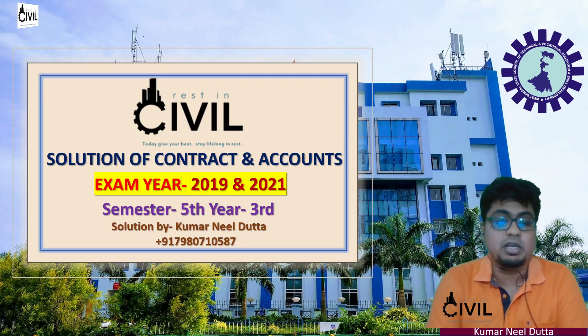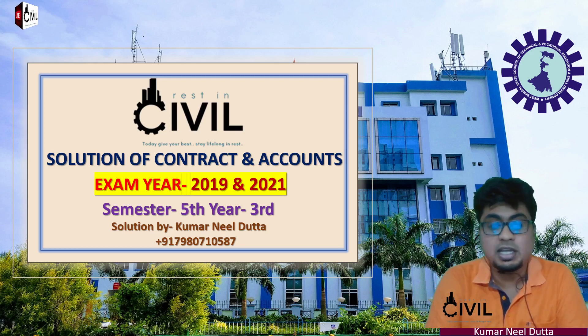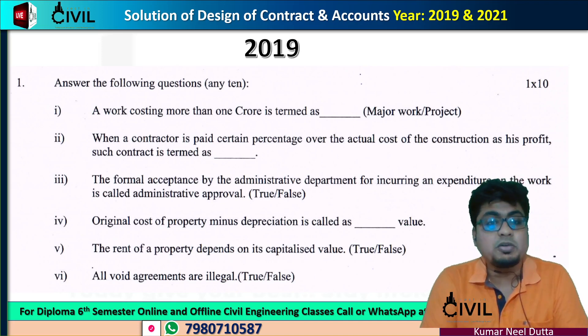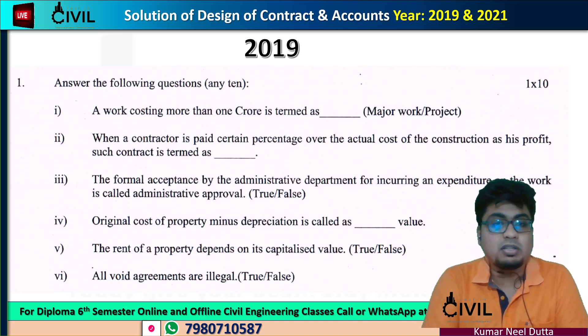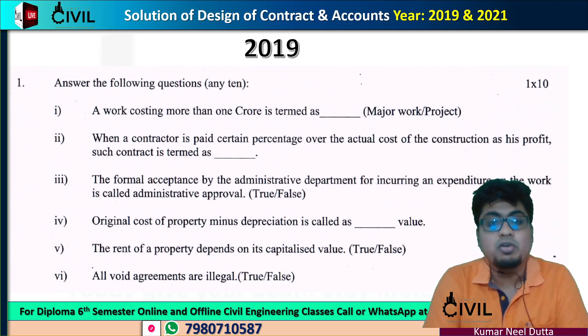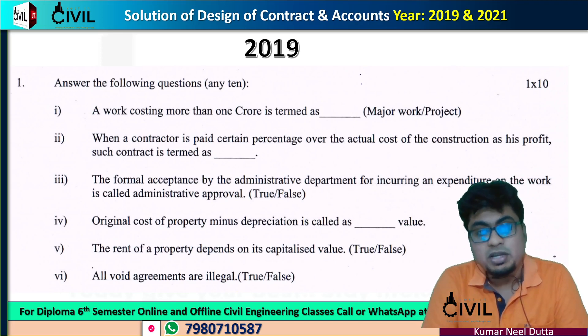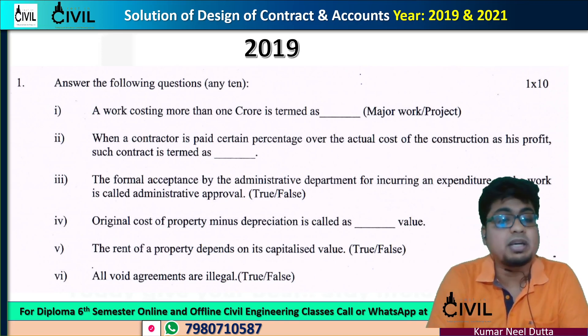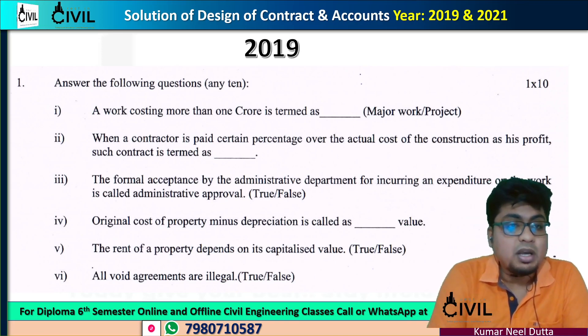This is the first question. In 2019, the work consists of more than 1 crore. It is done best. It is a major work project.